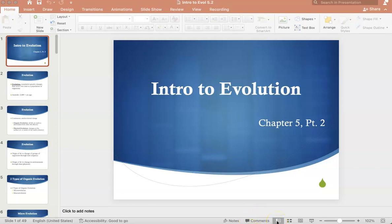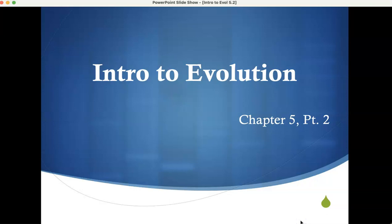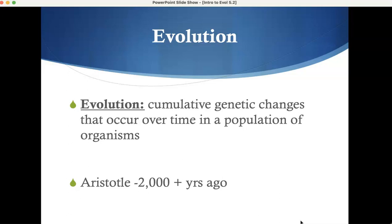The second part of Chapter 5 talks about a little bit of evolution, and this really is just an introduction. You could have an entire semester based on this stuff, so we've got one part of one chapter. Here's the definition: cumulative genetic changes that occur over time in a population of organisms. Hopefully we'll answer why this happened as we go through the conversation.